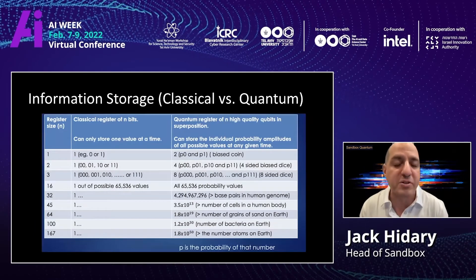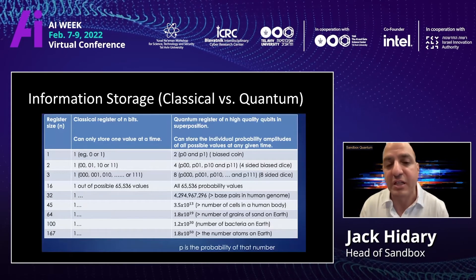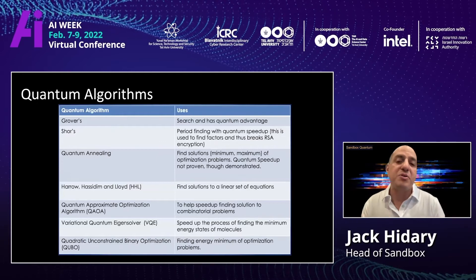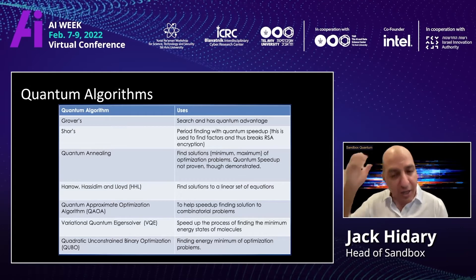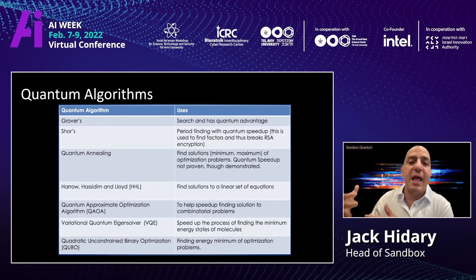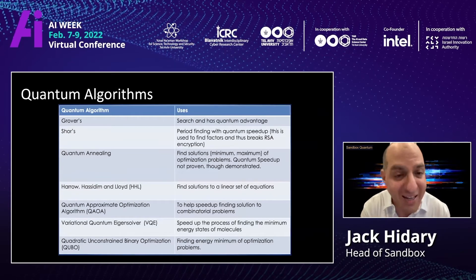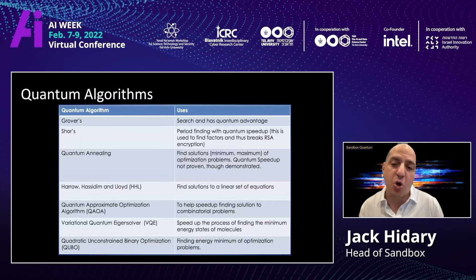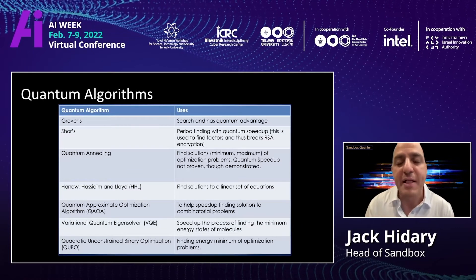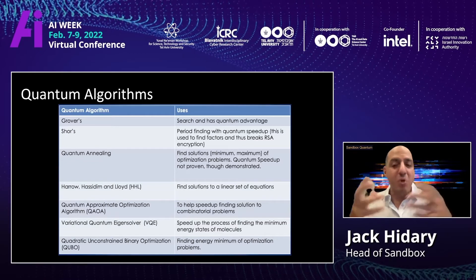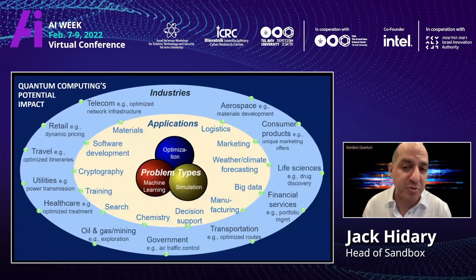One of the advantages of quantum is the representational space that you have, and that has led to a number of algorithms that are not possible to implement in any tractable way on a classical computer but we can now do on a quantum computer. Grover's gives us a quadratic advantage in search over classical machines. Shor's gives us exponential advantage over classical machines — most famously for factoring large numbers — along with many other algorithms as well.